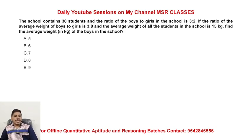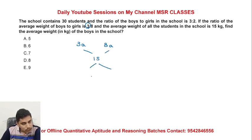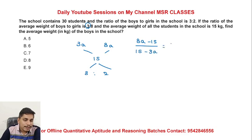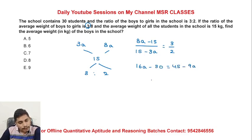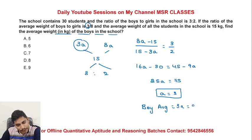The school contains 30 students. The ratio of boys to girls is 3 to 2. The ratio of average weight of boys to girls is given. The overall average weight is 15 kg. Using the formula: 8A minus 15 upon 15 minus 3A equals 3 by 2. Solving: 16A minus 30 = 45 minus 9A, so 25A = 75, giving A = 3. Boys' average weight is 3A = 9 kg. Option C is the final answer.